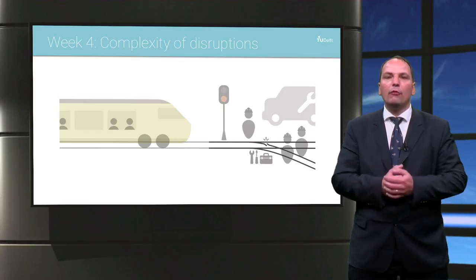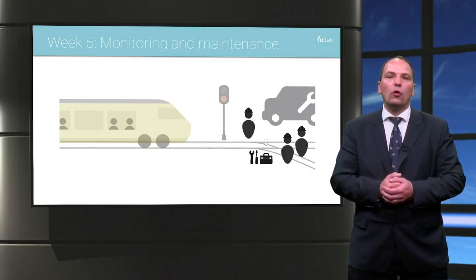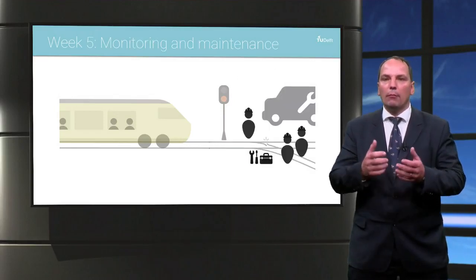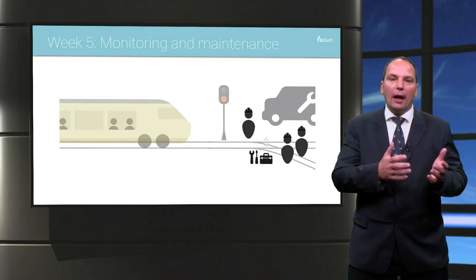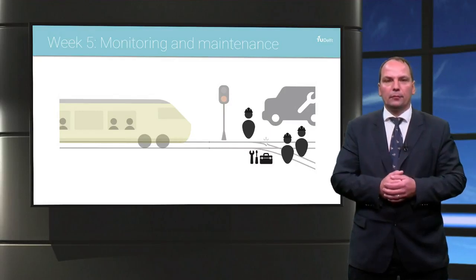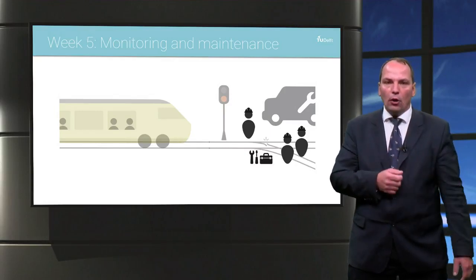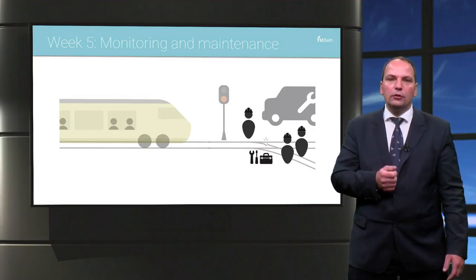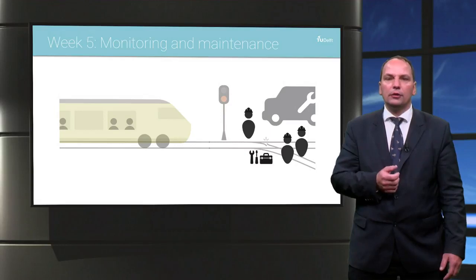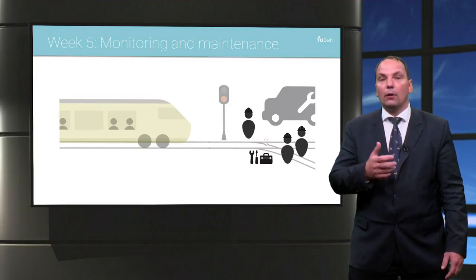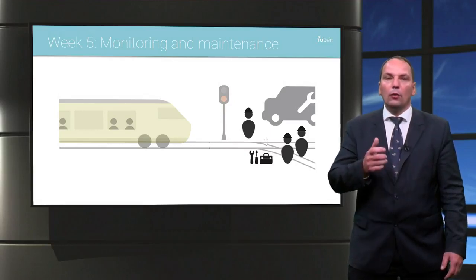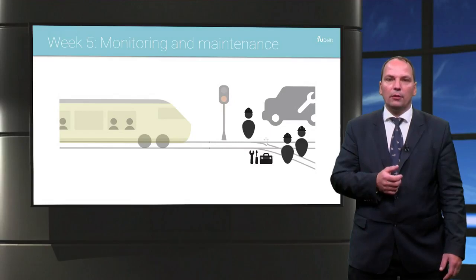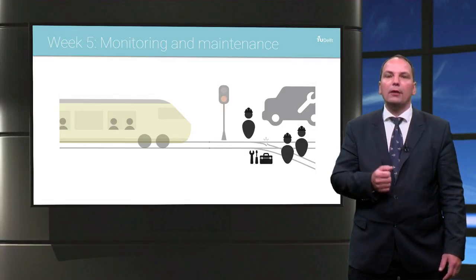Week 5 will introduce the complex relation between monitoring and maintenance. It will show what decisions can be made about reliability of the system, but also look at what can be done to balance reliability of the system and costs of maintenance.